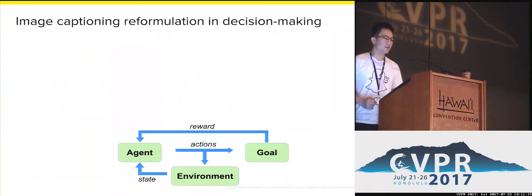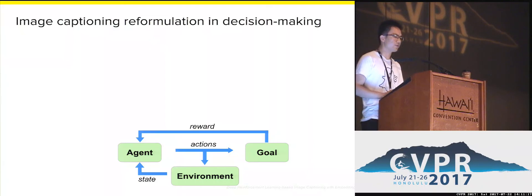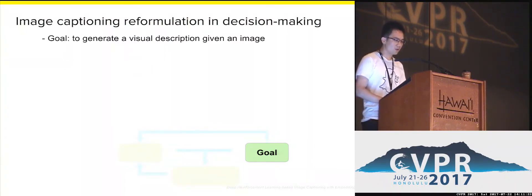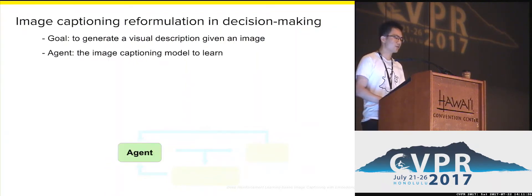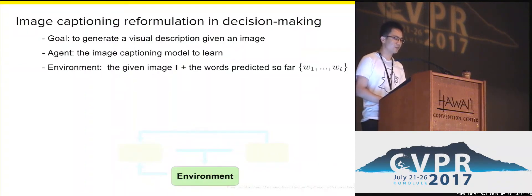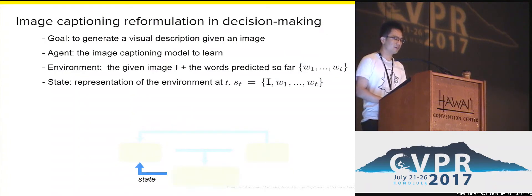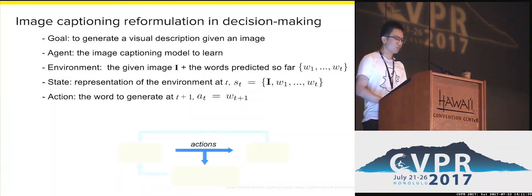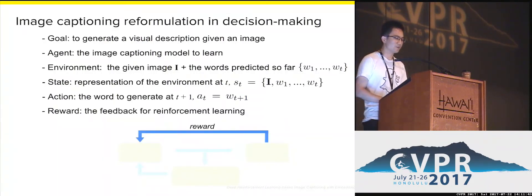So, we got inspired. The first problem is how to reformulate image captioning in a decision-making perspective. In image captioning, the goal is to generate a visual description given an image. The agent refers to the image captioning model we want to learn. The environment means the given image and the words predicted so far. A state is a representation of the environment at time step T. The action refers to the word to generate at T+1. And the reward is the feedback for reinforcement learning.